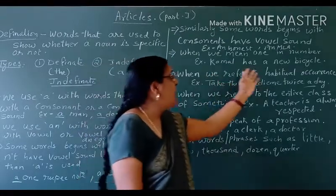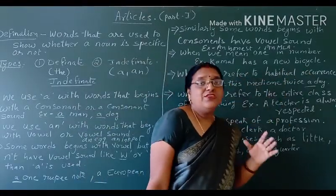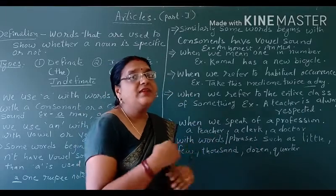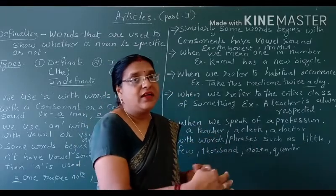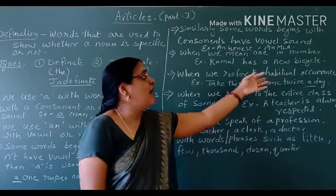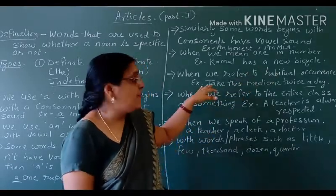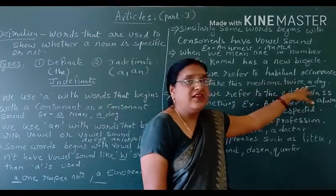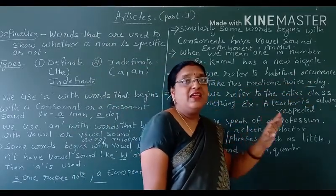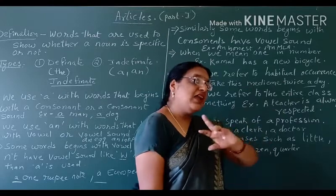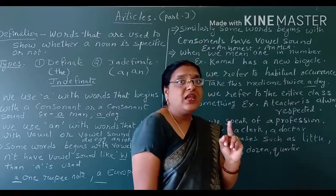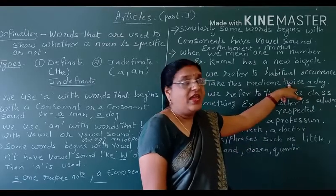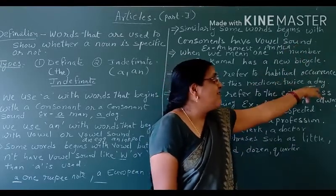When we refer to habitual occurrence — that means when we have to do a similar type of work again and again — that is habitual occurrence. For example: take this medicine twice a day. How many times in a day? Twice. Again, 'a' is used in the sense of one.